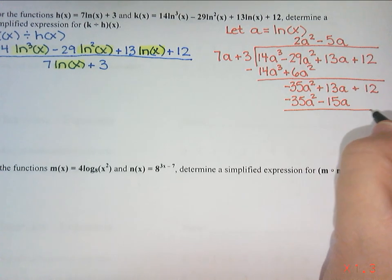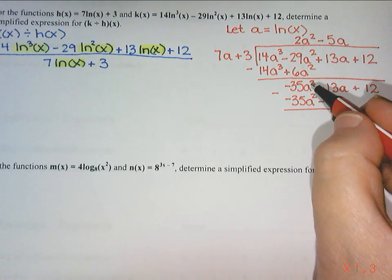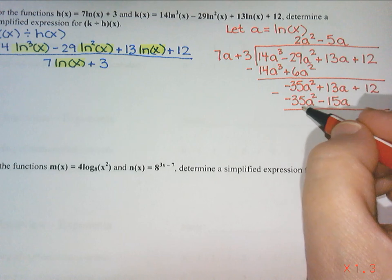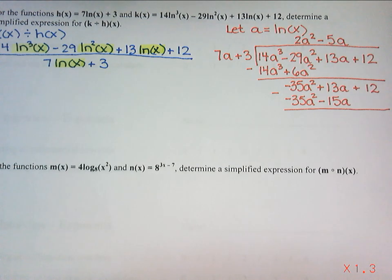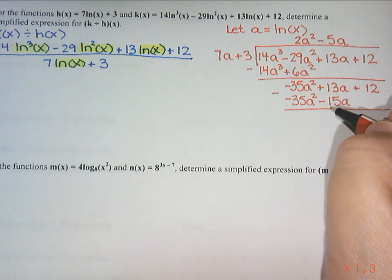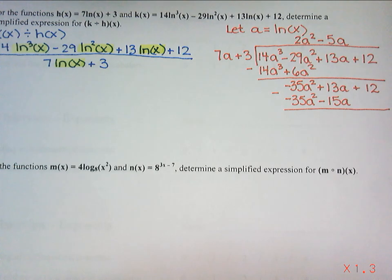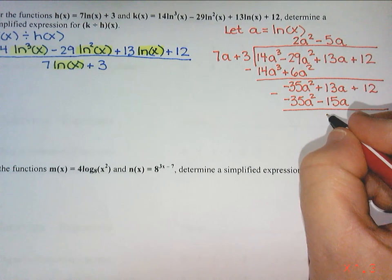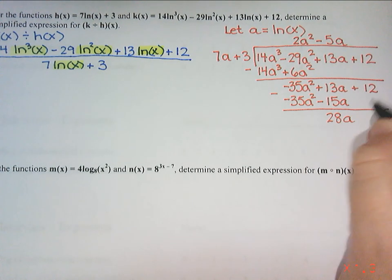We're going to subtract to see what's left over. So negative 35 take away negative 35 is 0. 13 take away negative 15, I believe is 28, but I am just going to double check that. Yep, I got 28. And then 12 take away nothing is 12.